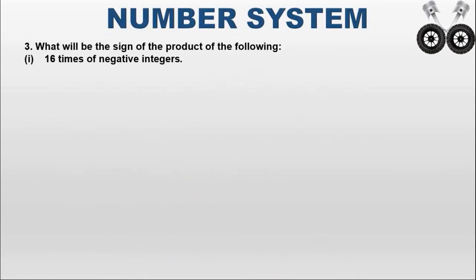Next question: what will be the sign of the product of 16 negative integers? Using the rule: (−1)^n, if n is an even number, the answer is positive 1. Even numbers are 0, 2, 4, 6, 8, 10, 12, 14, 16, and so on. Since 16 is even, the product of 16 negative integers is positive.